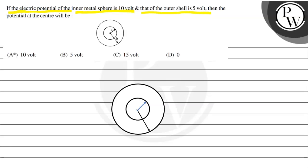outer shell is 5 volt, then the potential at the center will be 10 volt, 5 volt, 15 volt, or 0 volt.